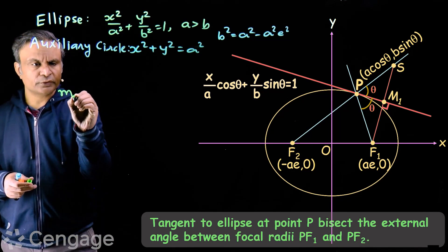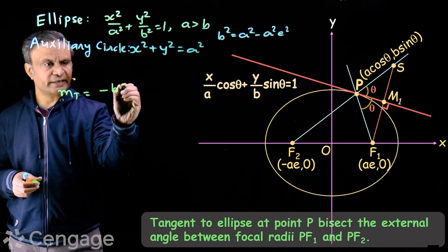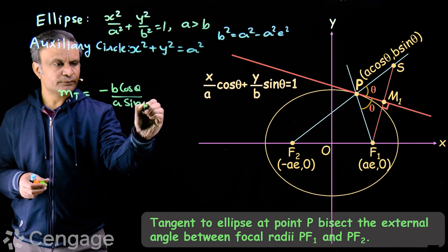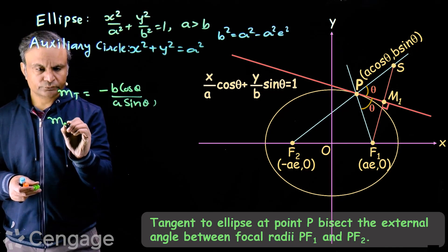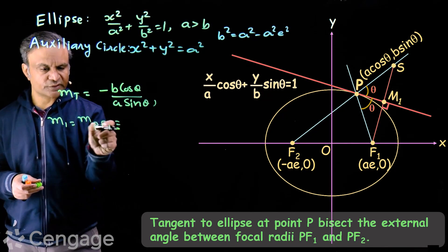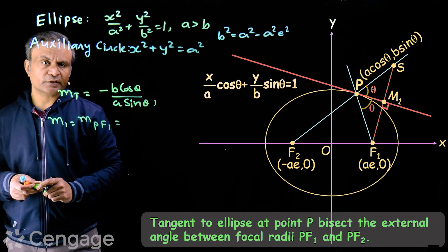Now slope of tangent will be minus B cos theta upon A sin theta. Slope of PF1, suppose slope M1 is, what will be the slope of PF1?